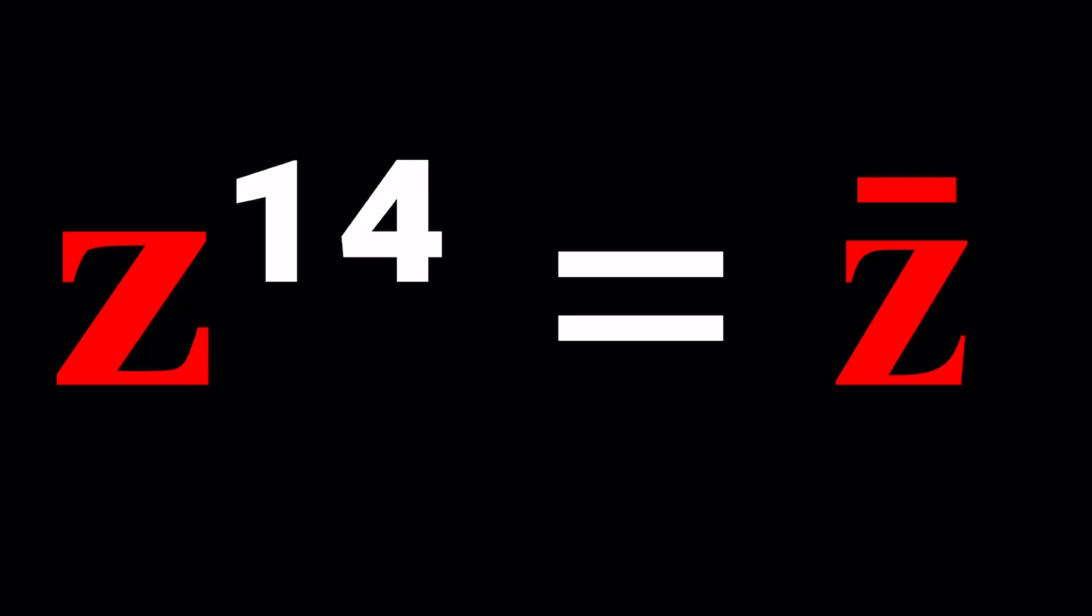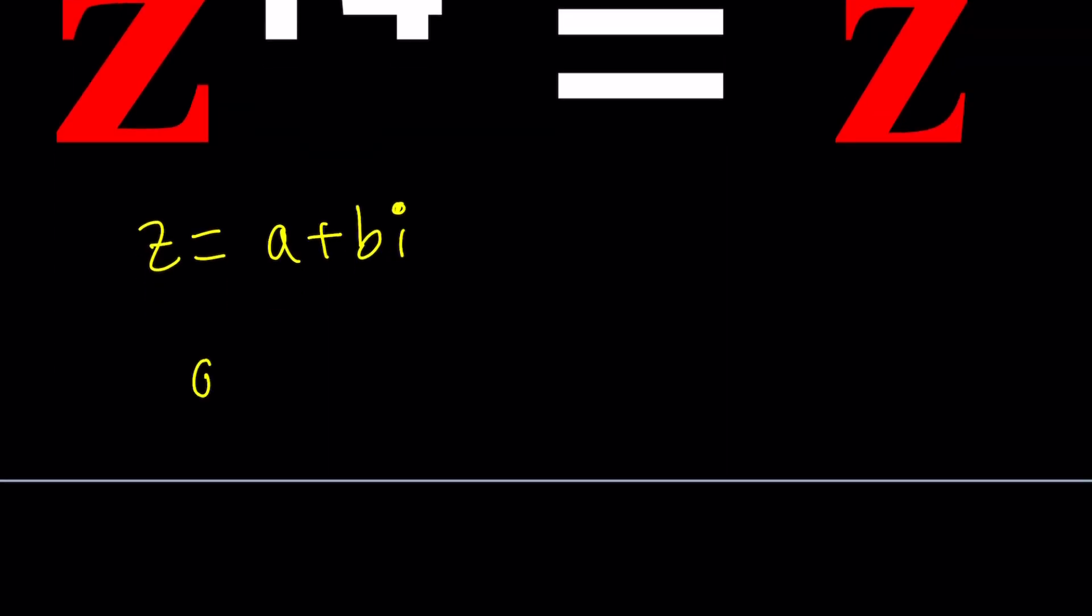Let's go ahead and make two attempts at solving this problem. The first attempt would be, since the name of this channel is A plus B I, I want to replace z with A plus B I because that's the general representation for a complex number. A and B are real. I is the number whose square equals negative 1.